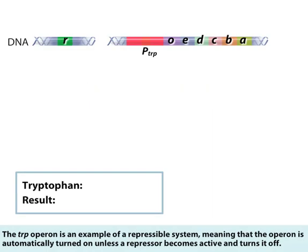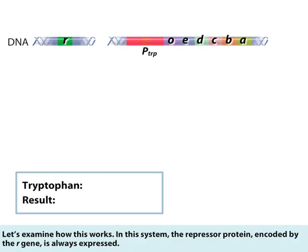The TRP operon is an example of a repressible system, meaning that the operon is automatically turned on unless a repressor becomes active and turns it off. Let's examine how this works.